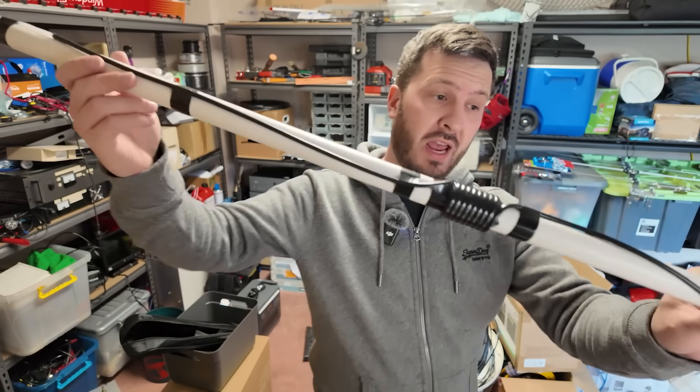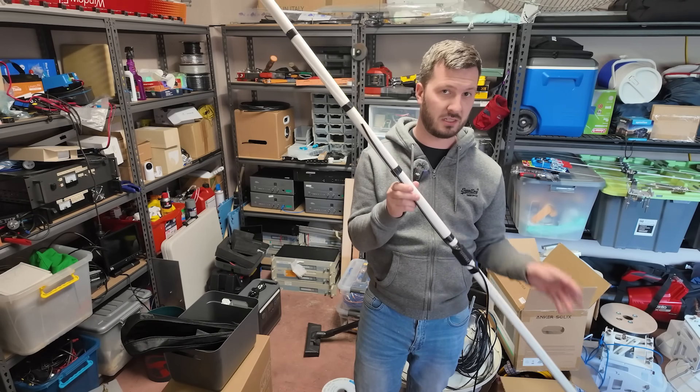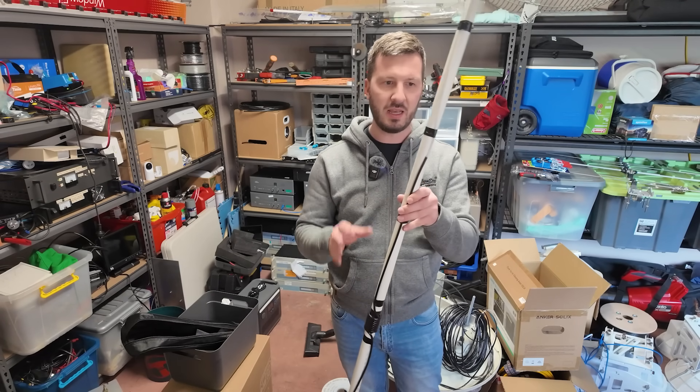G'day there guys, so today I'm going to show you how to build this antenna. This is one of the easiest antennas to build for the two metre band. It is a flower pot or a T2LT antenna.